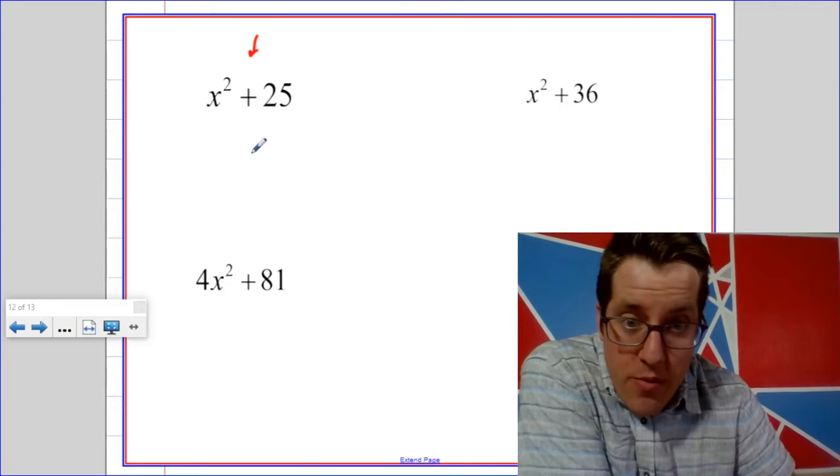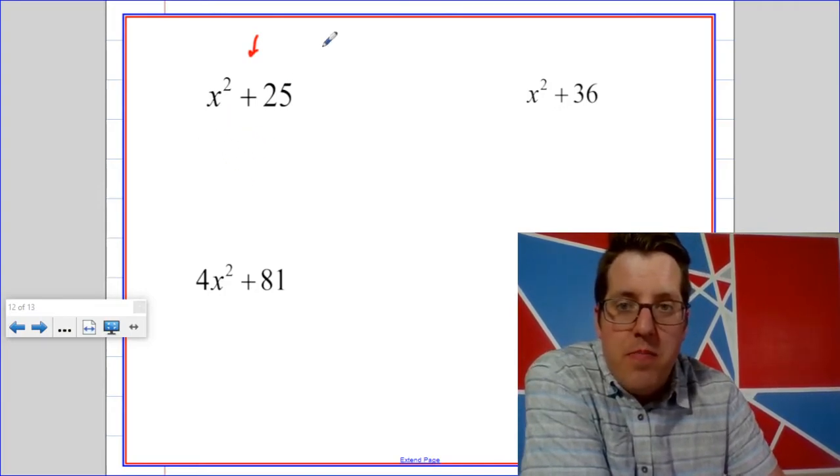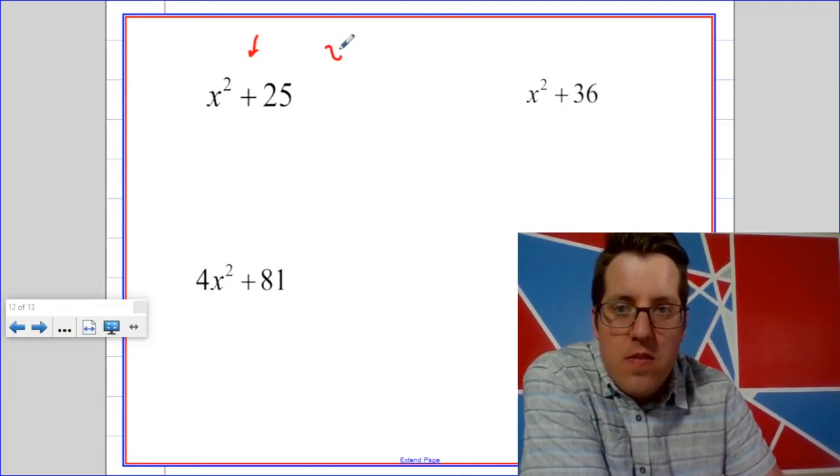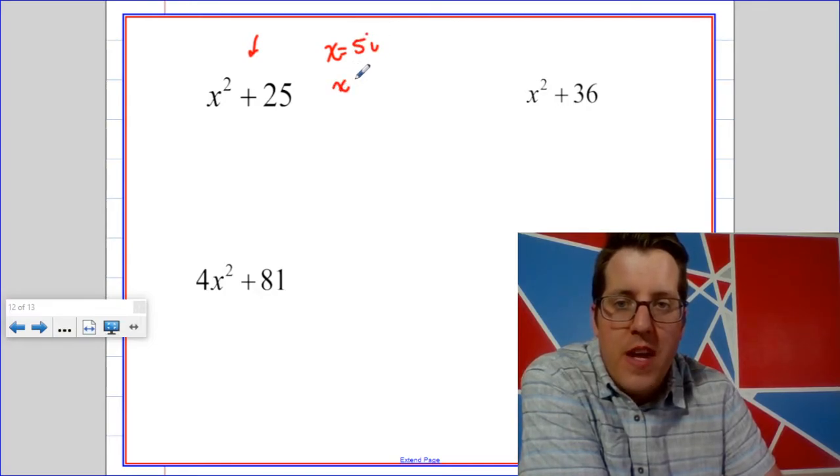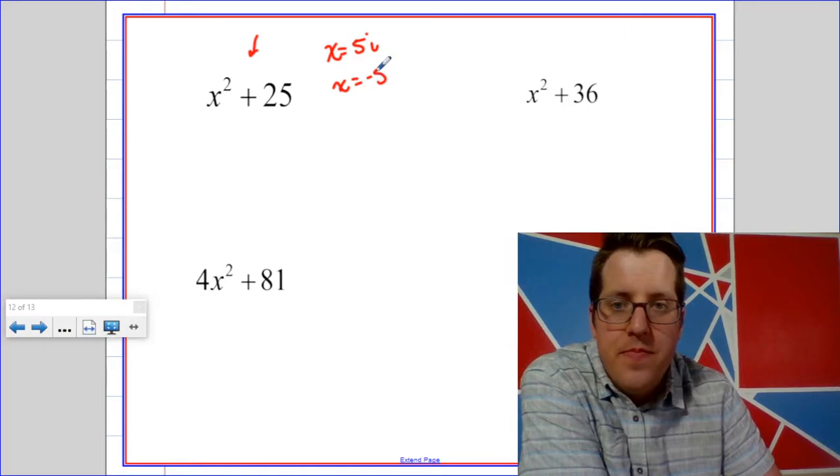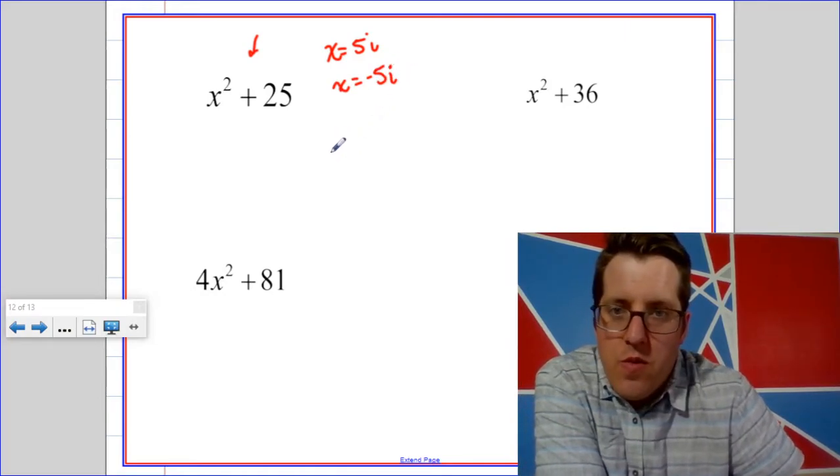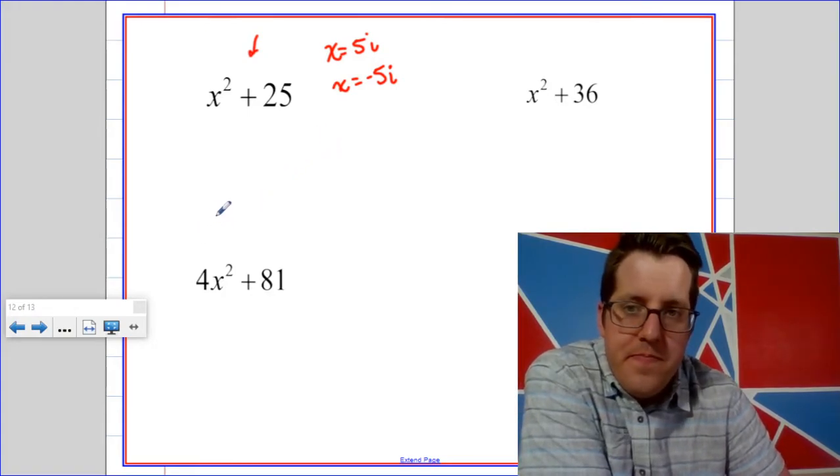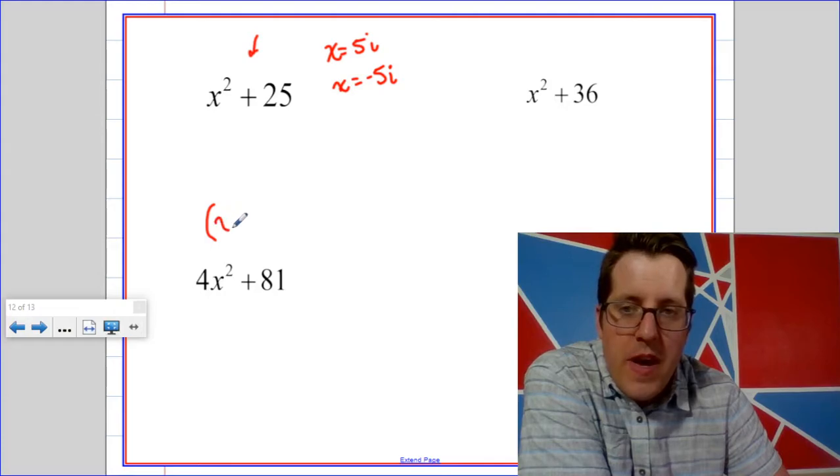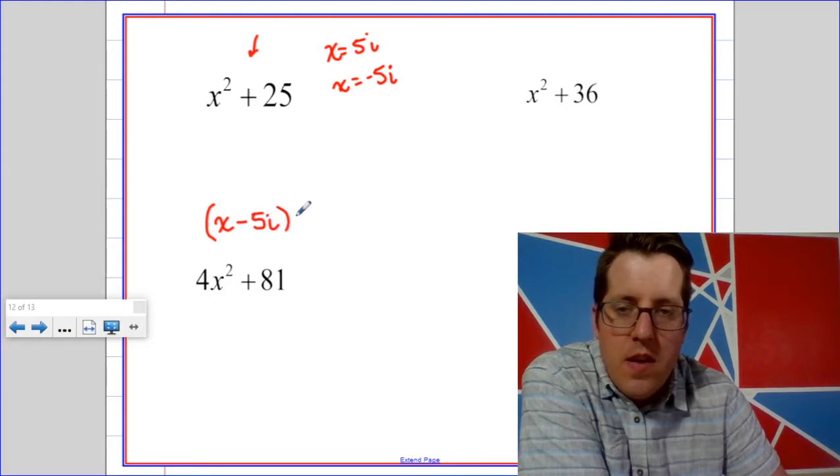Now we know from working with imaginary numbers that if I plugged in x equals 5i or x equals negative 5i, those are our two zeros. So we could work backwards and say oh, so my factors must be x minus 5i and x plus 5i.